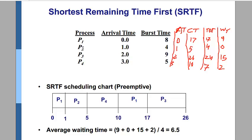Here we have four processes: P1, P2, P3, and P4. The arrival time is given and the burst time is given. First of all, when we start Shortest Remaining Time First, we don't see the priority process — P1 always comes first.